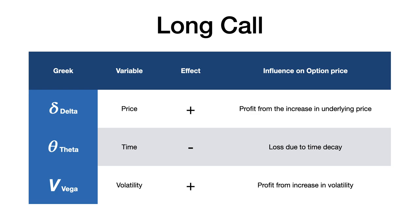Finally, vega measures sensitivity to implied volatility, and its effect on a long call is positive — you profit from an increase in volatility. For example, during earnings season, people expect higher movements in stock price, so the option price will increase accordingly because our option price includes vega. That's it for the long call option. See you in the next video, bye.